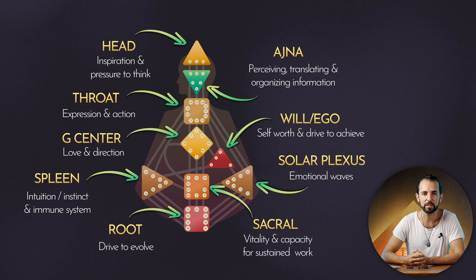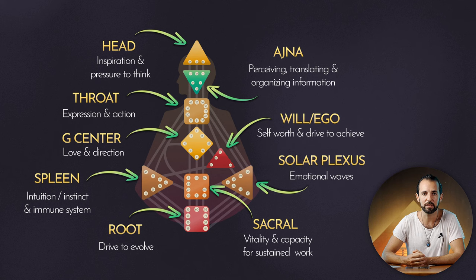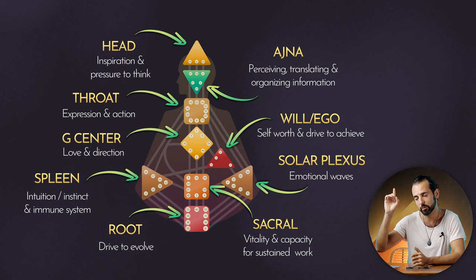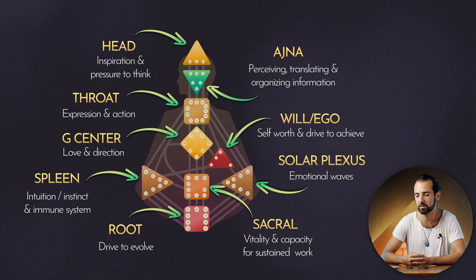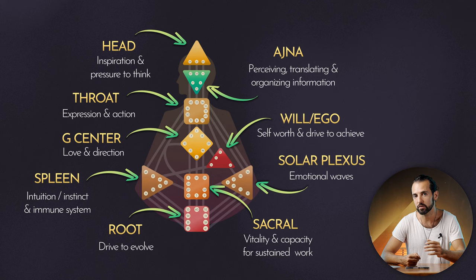Here we have a brief definition of all the centers. There's another video that goes much deeper into the defined and undefined characteristics of all the centers — I'll put a link up there. But for now, quickly: the head is the inspiration and the pressure to think, the energy that makes you want to find meaning and answers in your life. The Ajna center is like a computer — it organizes, perceives, structures information, and stores it in memory. The throat is a center of expression and action — about communication but also about doing and initiating things in your life.